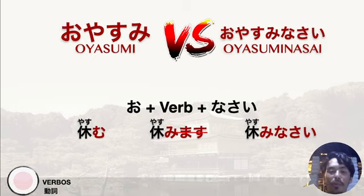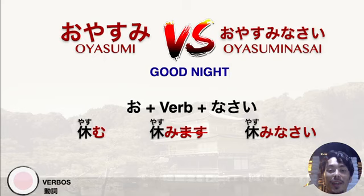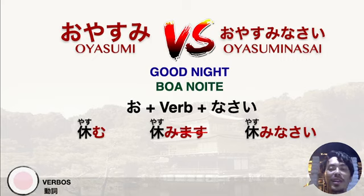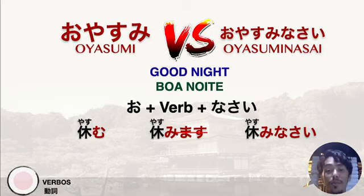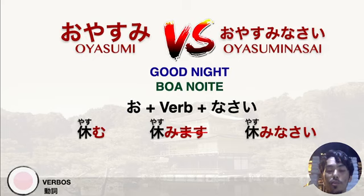Both of them basically mean good night. Os dois significam boa noite. The difference is that oyasumi nasai is more polite. How we make oyasumi nasai is very simple. We take the verb, which in this case is the verb yasumu, which means to rest. We use the masu form, so yasumi masu. And then we will change the masu for nasai, so it becomes oyasumi nasai.